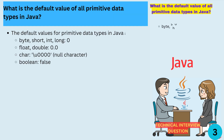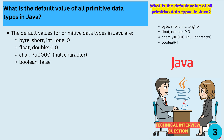What is the default value of all primitive data types in Java? The default values for primitive data types in Java are: byte, short, int, long — zero. Float, double — 0.0. Char — backslash u0000, null character. Boolean — false.